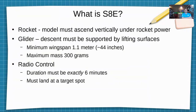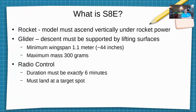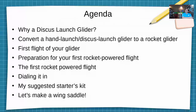Specifically, what is S8E? It's a radio control rocket glider event. The model must ascend vertically under rocket power — no super long burn spiraling up to altitude. It's a glider, so it must be supported by lifting surfaces, with a minimum wingspan of 1.1 meters (about 44 inches) and a maximum gross mass of 300 grams. The radio control part is that it's a precision event: the duration must be exactly six minutes and you must land at a target spot.